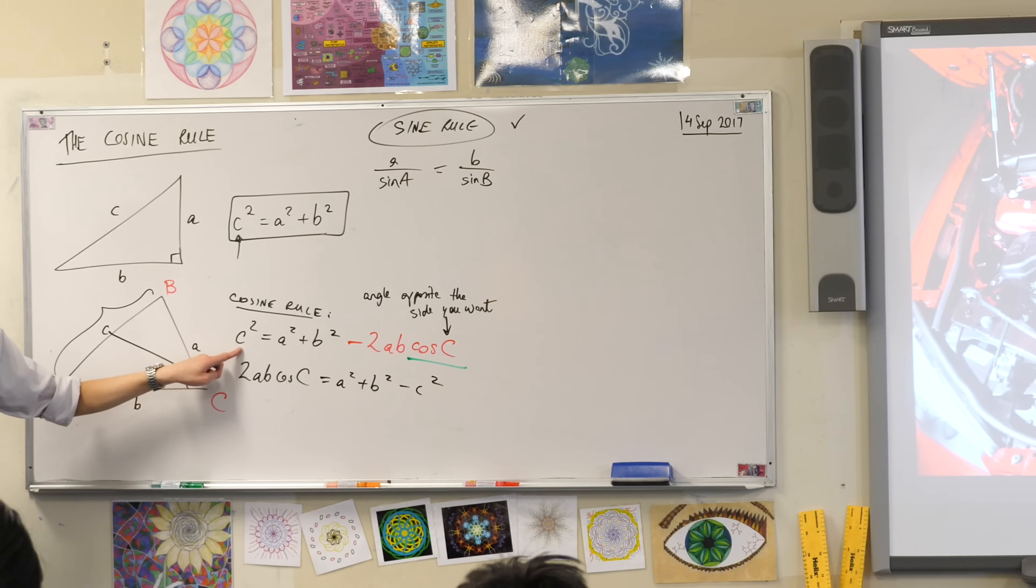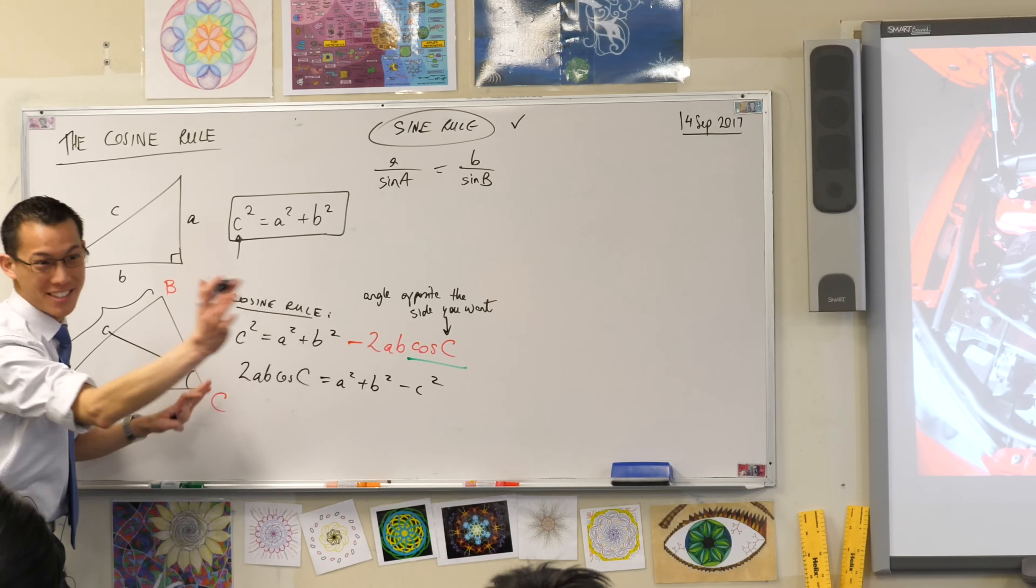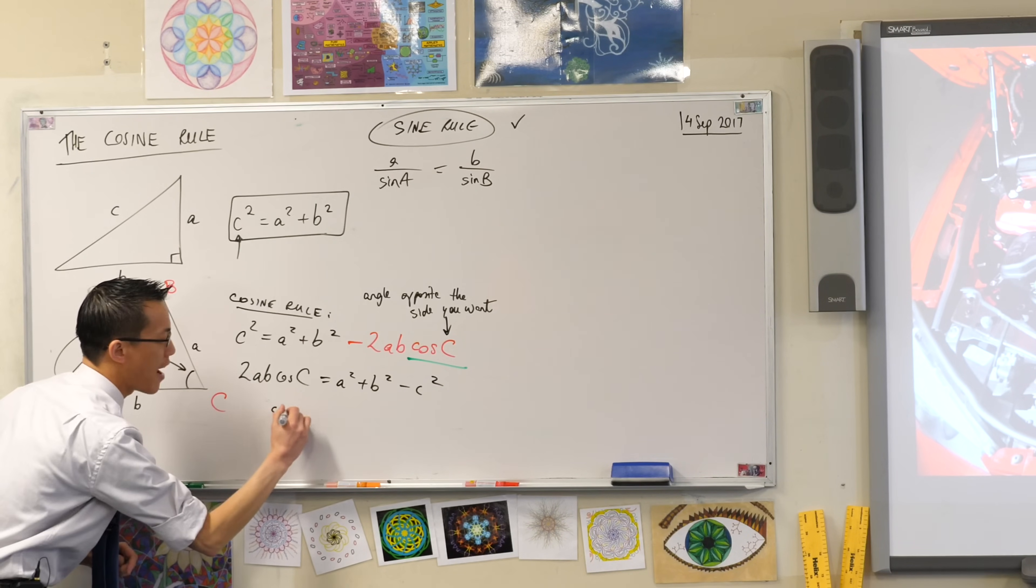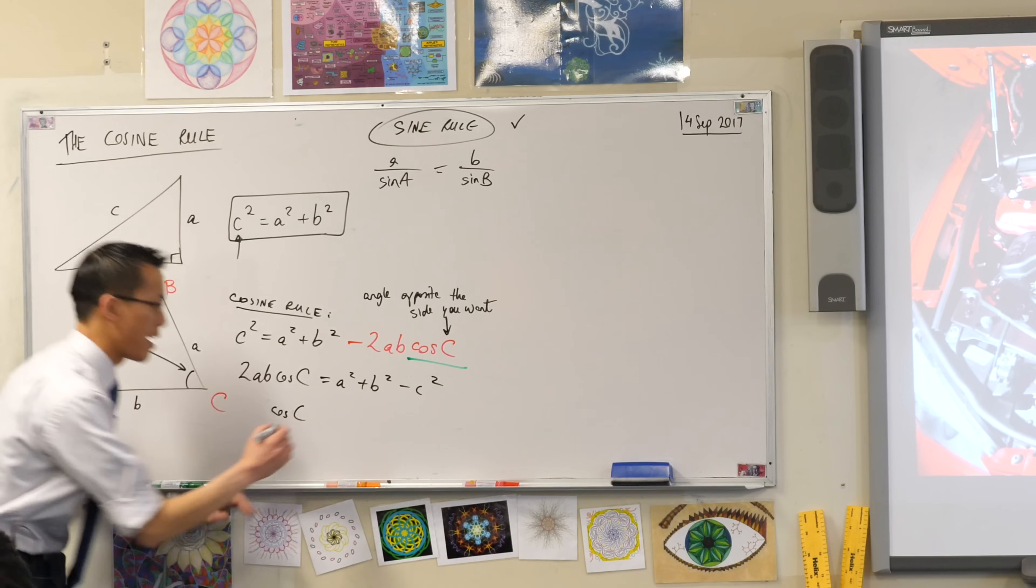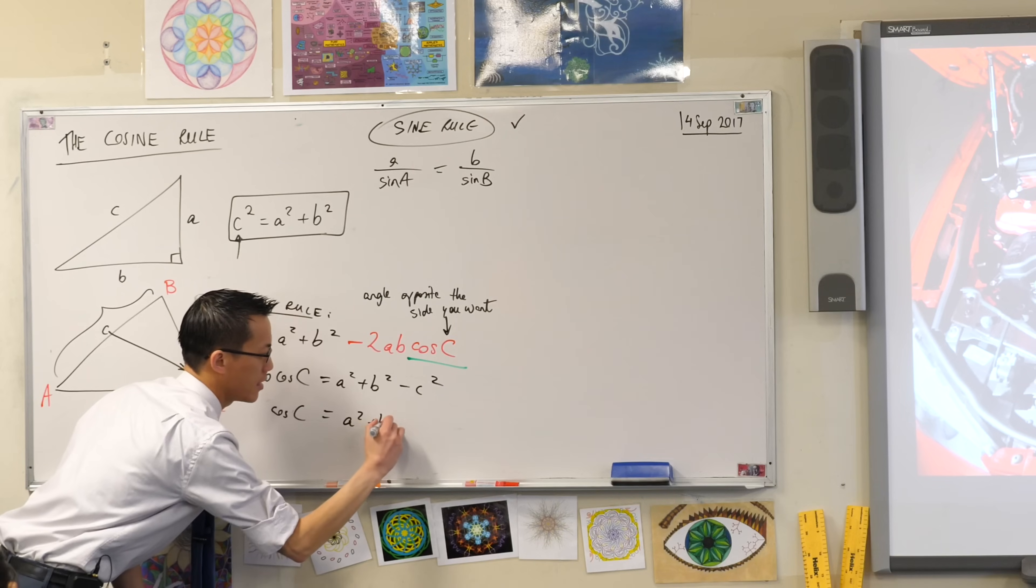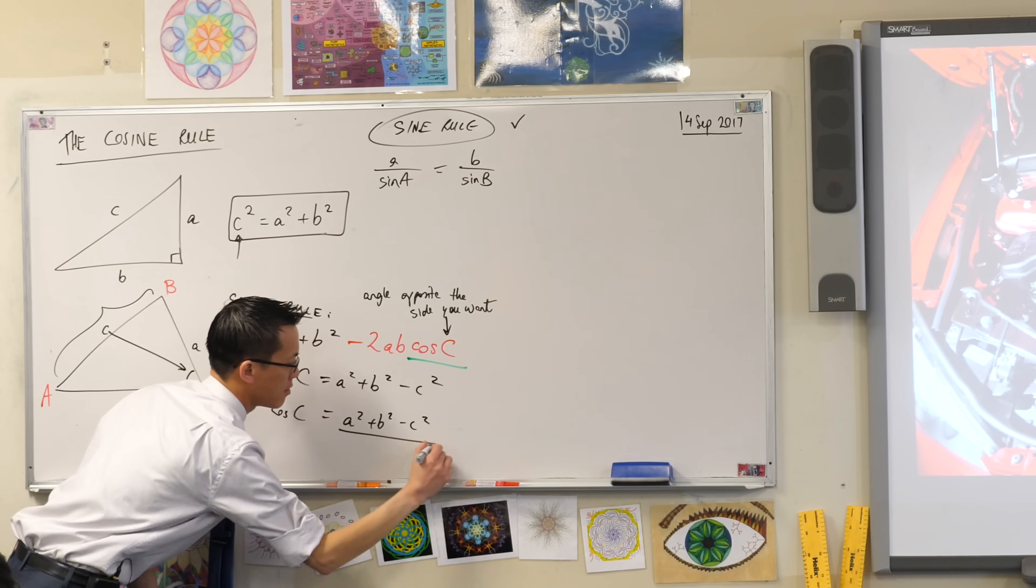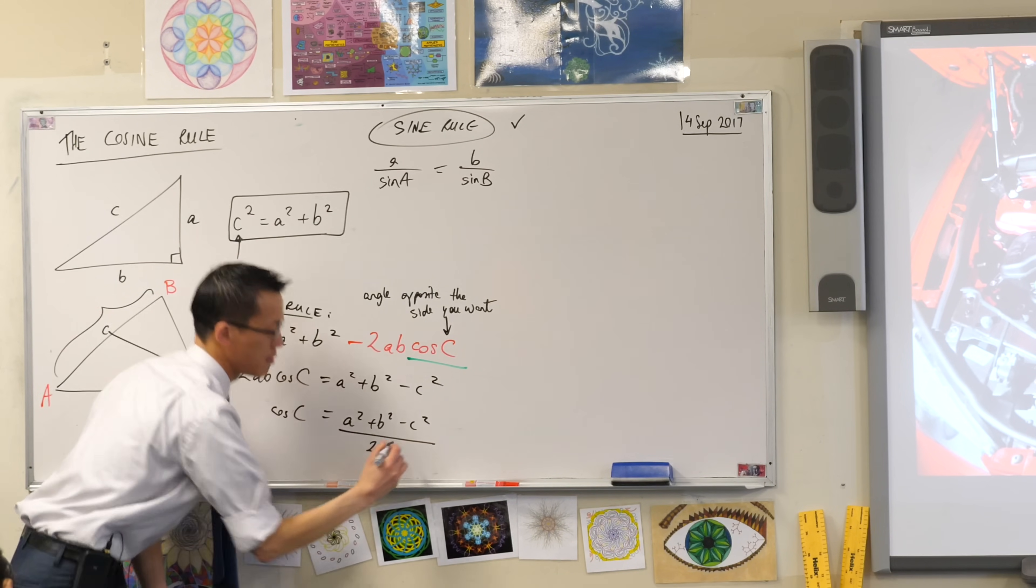At this point, I only need to do one more thing. Which is, I don't want the 2ab. So, what shall I do? I will divide through by 2ab. So, if I divide through by 2ab, then on the right-hand side, I'll get this.